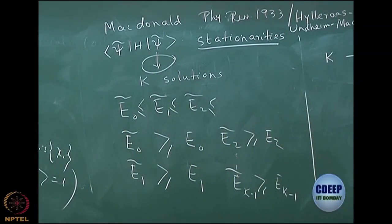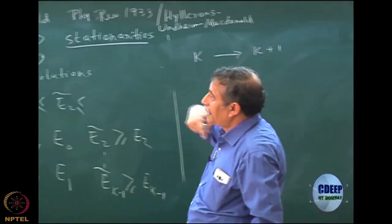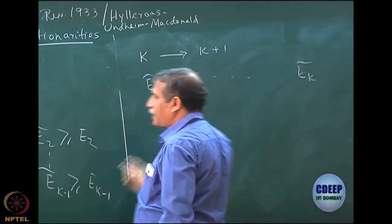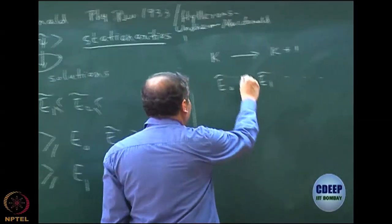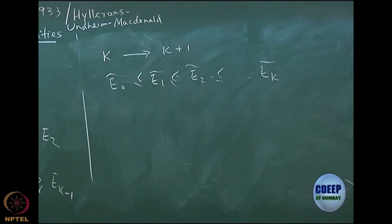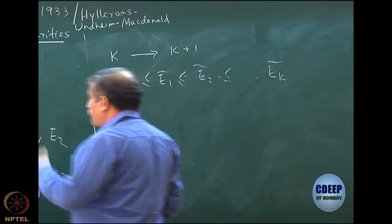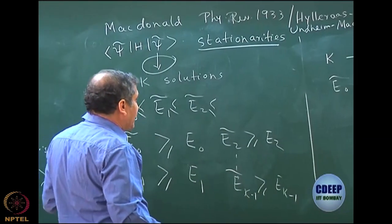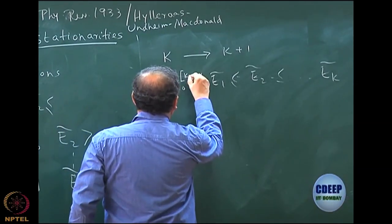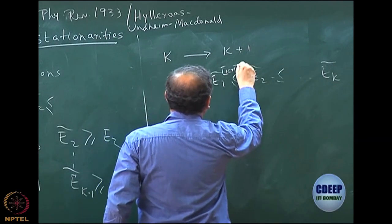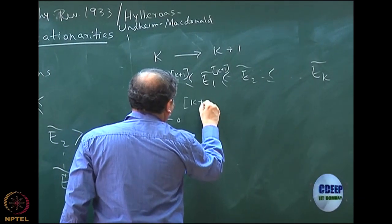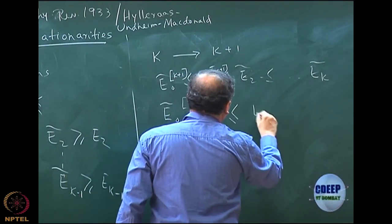I order them in the same manner. To distinguish, let me call them E_0 tilde (k+1), E_1 tilde (k+1), and so on. The theorem then says that E_0 tilde (k+1) is always less than or equal to E_0 tilde (k). So in a k plus 1 dimensional basis, the corresponding solution after stationarity will always be less than or equal to the solution with the previous basis. Adding a basis only lowers the energy, and from Theorem 2 you already know lowering the energy is very good because it brings you closer and closer to the ground state.